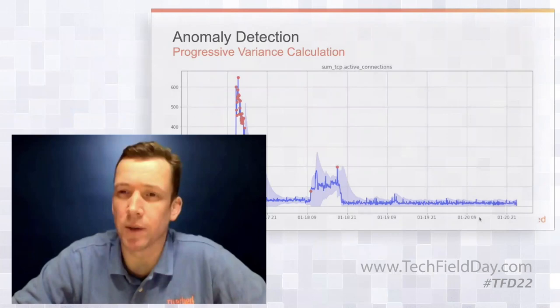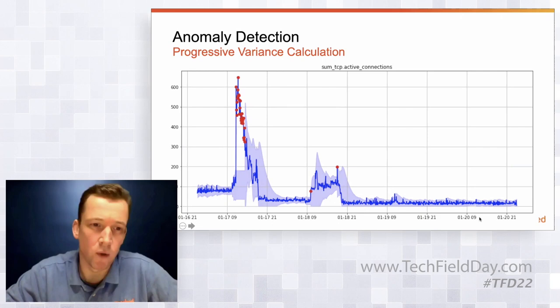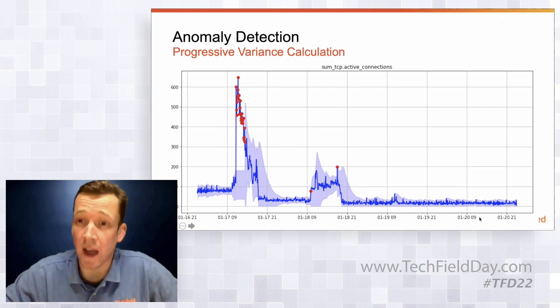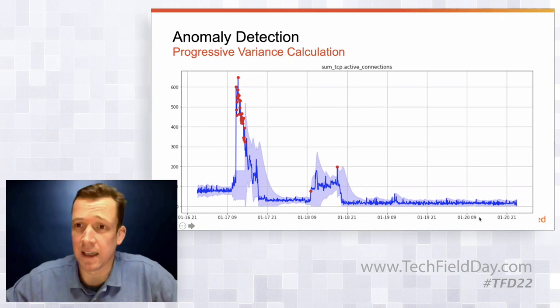I want to start with anomaly detection because it's one of those things that everybody just about knows. It's straightforward, easy — a progressive variance calculation. The blue line is the number of active TCP connections from an app response. The light blue river graph around it shows the expected normal ranges, and when the blue line goes outside of that, you get a red dot — that's an alert.